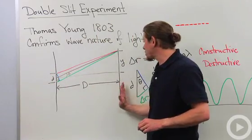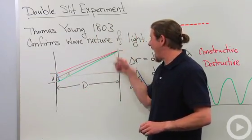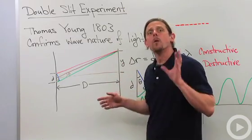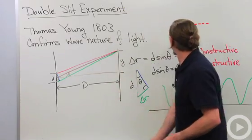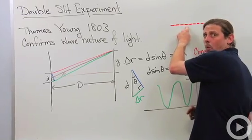We're going to send light through it, and then we've got a screen a distance capital D away, and we want to look at the pattern that we get. What we end up seeing is something that looks like this, so we have a central maximum where it's very bright.